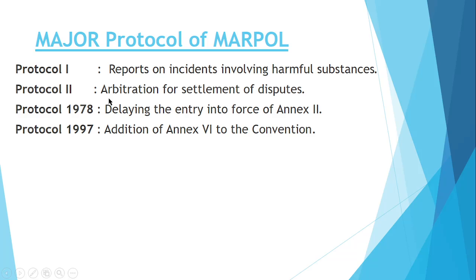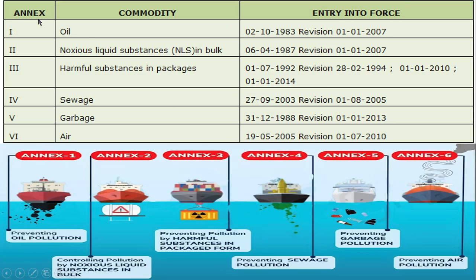In 1987, Annex 6 came. As you can see on the screen, there is: Annex 1 oil, Annex 2 noxious liquid substances, Annex 3 harmful substances in packaged form, Annex 4 sewage, Annex 5 garbage, and Annex 6 air pollution. There are a total of six annexes in MARPOL. The first talks about oil pollution, the second about noxious liquid substances, the third about harmful substances in packaged form, the fourth about sewage pollution, the fifth about garbage, and the sixth about air pollution.